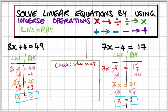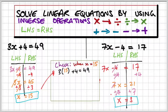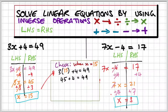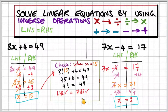Let's check the first equation then: 3x plus 4 is equal to 49. Remember, we're going to substitute x equals 15. So 3 times 15 plus 4 gives 49. Well, 3 times 15 is 45, plus 4 is 49. Since 49 is equal to 49, the left-hand side and the right-hand side are balanced. So that problem is solved.